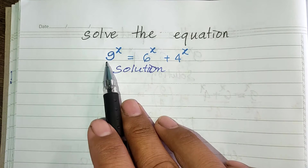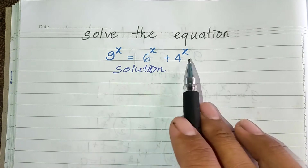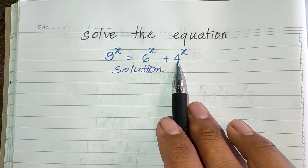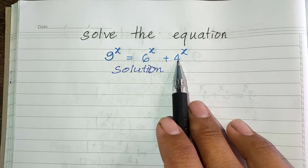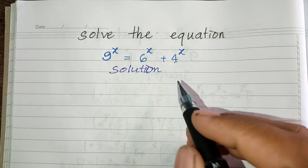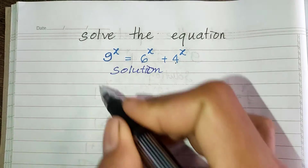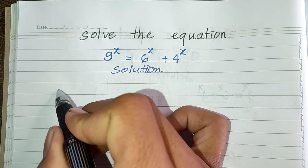Now if we look at 9, we can write it as 3 squared. And 4 we can also write as 2 squared.